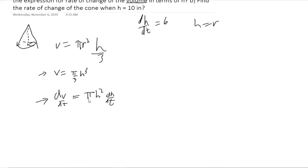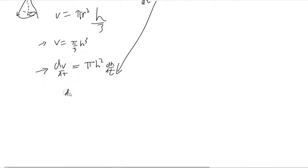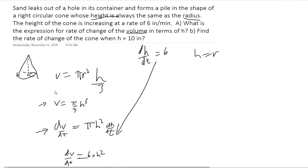So this is dV/dt in terms of h. But we have a dh/dt that we want to get rid of, and we can just sub in 6. So we're going to get dV/dt equals 6πh². And so that is the answer for part A. We have the expression for the rate of change of volume in terms of h.